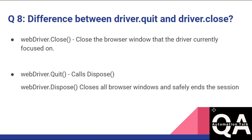The next question is: what is the difference between driver.quit() and driver.close()? driver.close() will close only the browser window that the driver is currently focused on. driver.quit() calls driver.dispose(), which closes all windows and safely ends the session. That is the key difference between driver.quit() and driver.close().